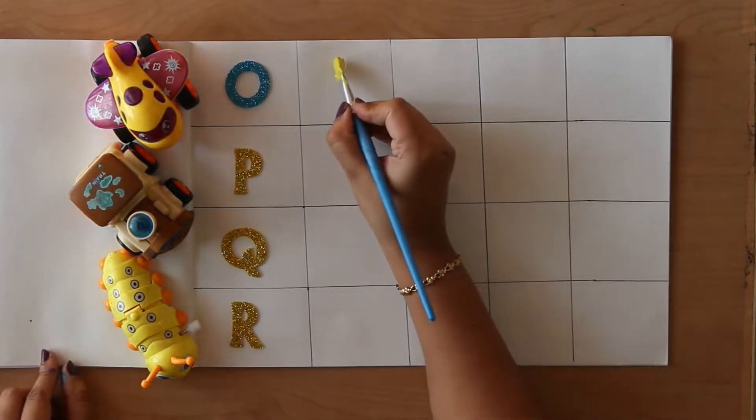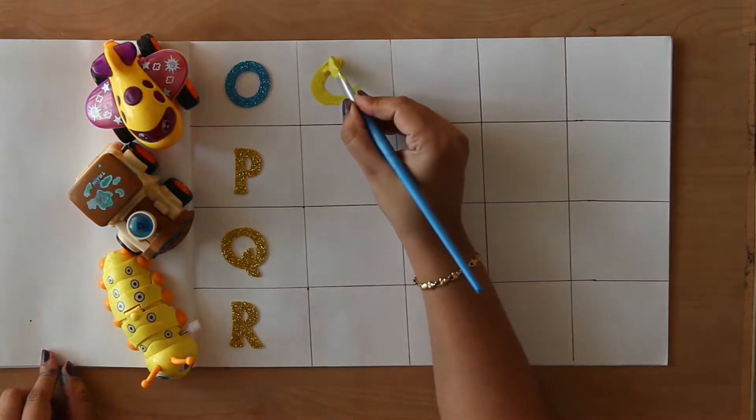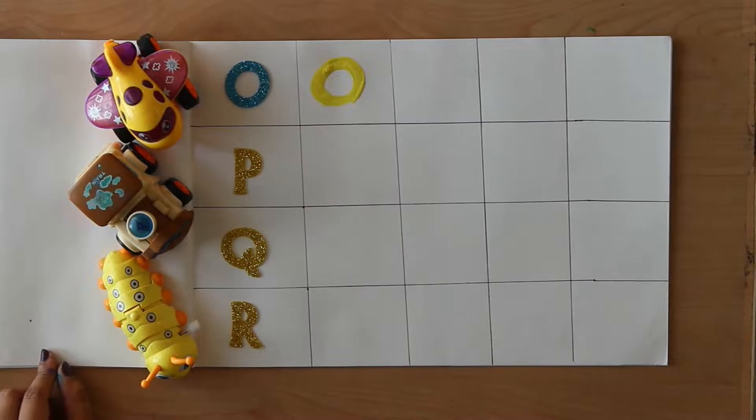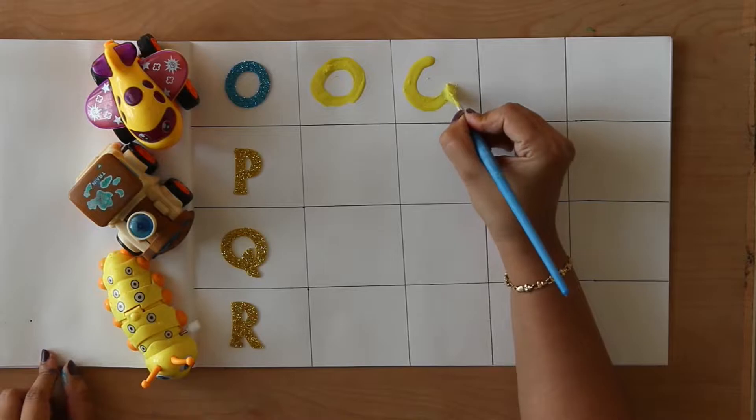Yellow color. O. O for orange. Orange means Santra. O. O for onion. Onion means Pyaaj.